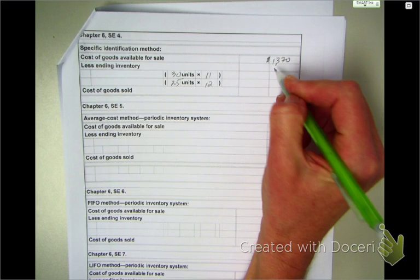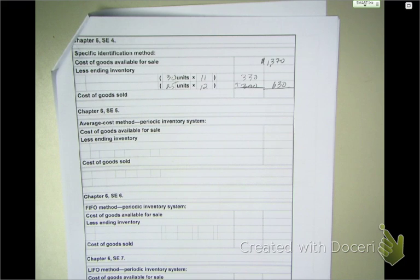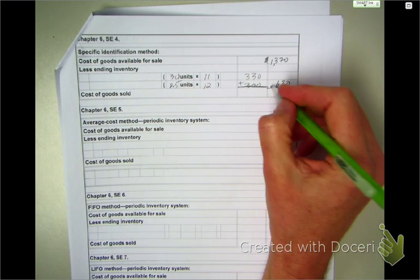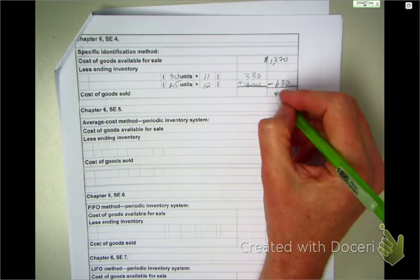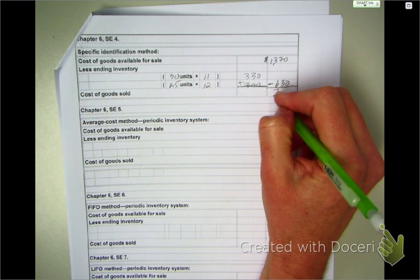It's $300. So, what is that? Is that my ending inventory or my cost of goods sold? It's my ending inventory. So I'm going to take this away, and it's going to give me my cost of goods sold of $740.